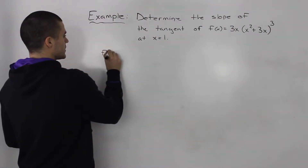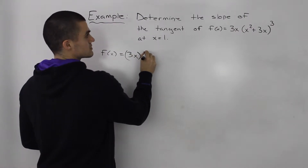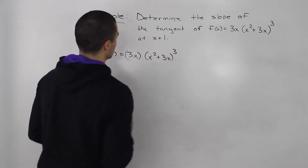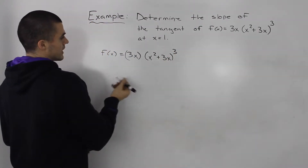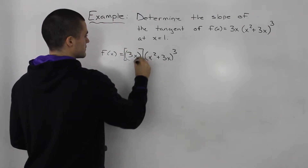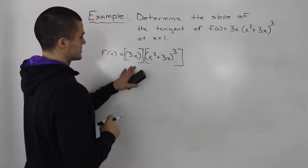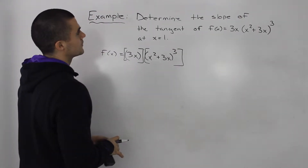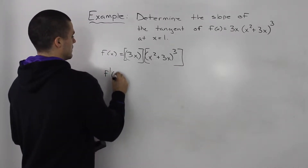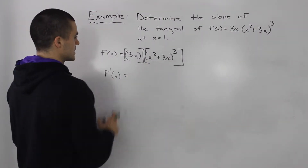The first thing we can do is rewrite this equation. We have x² + 3x to the power of 3. Notice that this f(x) is a product of two functions. It's a product of two functions, and we have to determine the slope, so we know we're going to have to take the derivative.